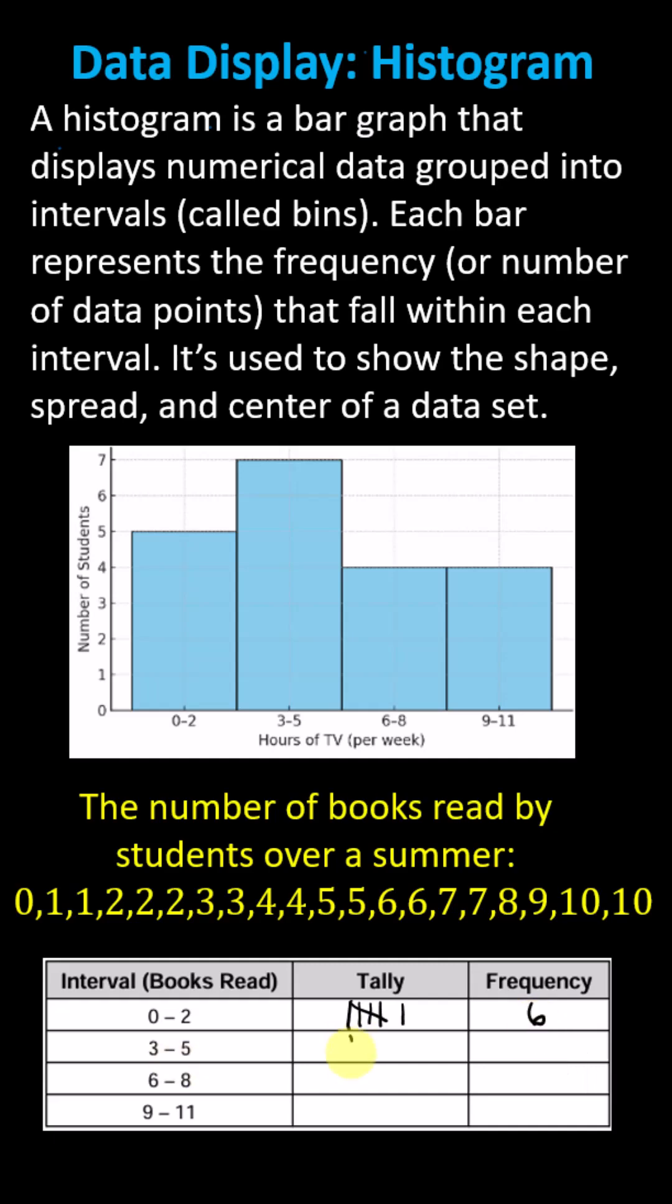Next, for 3 to 5, we have two 3s, two 4s, and two 5s. The frequency is 6.